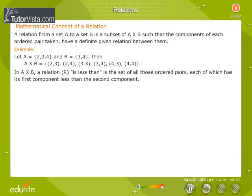In the set A × B, Relation R "is less than" is the set of all those ordered pairs, each of which has its first component less than the second component. Therefore, R is equal to {(2,3), (2,4), (3,4)}.